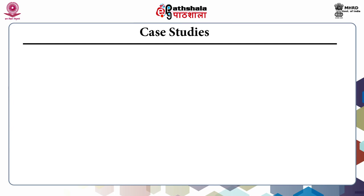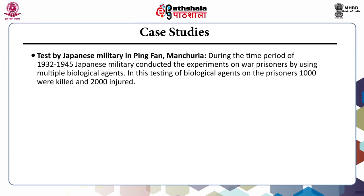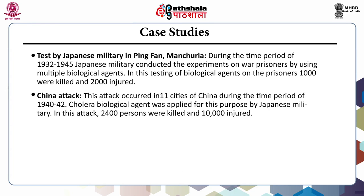Discussing some case studies: first, the test by Japanese military in Pingfan, Manchuria. During 1932 to 1945, the Japanese military conducted experiments on war prisoners using multiple biological agents, killing thousands and injuring two thousand. Another example is the China attack: in eleven cities of China during 1940 to 1942, cholera was applied as the biological agent by Japanese military, killing 2,400 persons and injuring about 10,000.